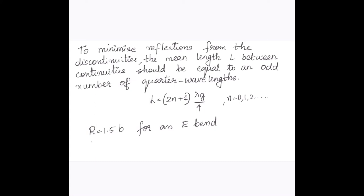And similarly, R equal to 1.5A for an H bend. So here A and B are dimensions of the waveguide.